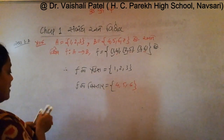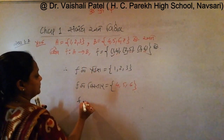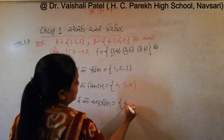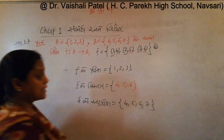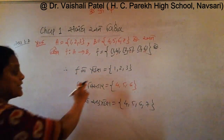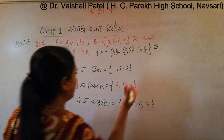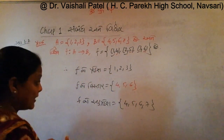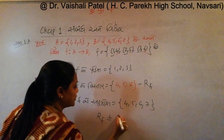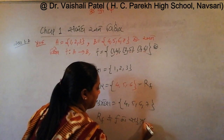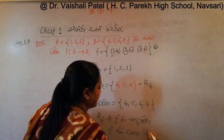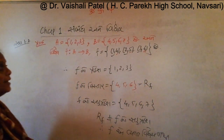The range of F is {4, 5, 6}, which is not equal to B, which is {4, 5, 6, 7}. Therefore F is not surjective onto B.